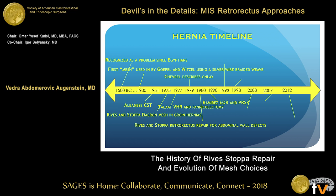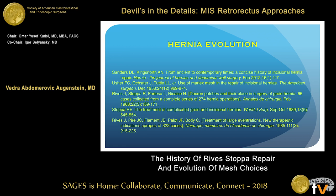Now focusing on component separations: Ramirez with the external oblique release and posterior components, posterior release of the posterior sheath. LeBlanc with lap ventral hernia. Stopa describes laparoscopic TEP. Then robotic ventral hernias being started. Milburn laparoscopic component separation techniques. And Abdallah with the robotic component separation. Some of these may be controversial, and I included a whole list of references if you want to go through this and become quite a historian.